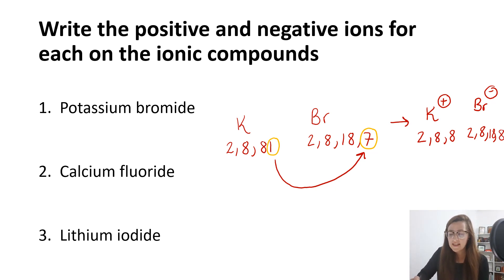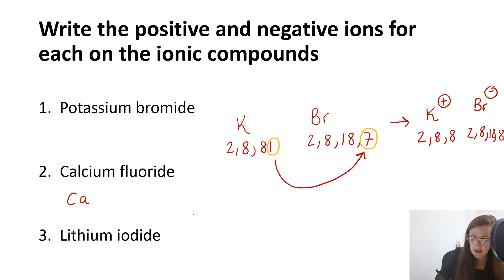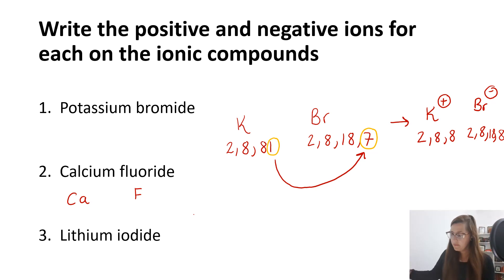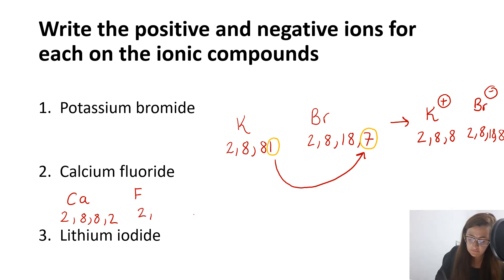Potassium now has a full outer shell because it's lost an electron to bromine, making it a positive ion. And bromine has a full outer shell because it's taken an electron from potassium, giving it a negative charge. For calcium fluoride, calcium's symbol is Ca and fluorine's symbol is F. Calcium has an electron arrangement of 2, 8, 8, 2, and fluorine has an electron arrangement of 2, 7.